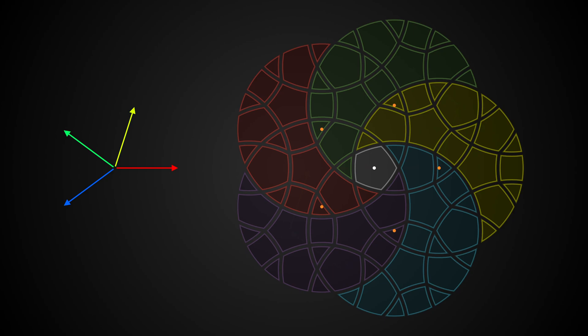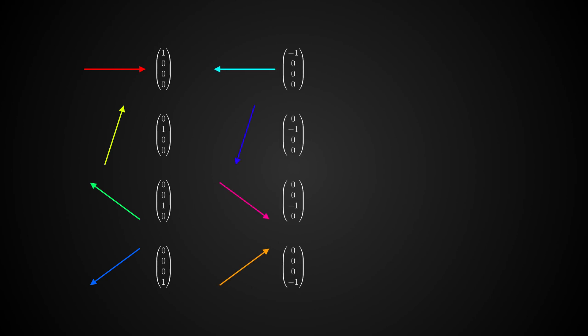I promised we'd be using vectors and matrices, so how does that work? We can map these arrows to four-dimensional vectors. We define the red arrow to correspond to the first unit vector, and we do the same for the other three arrows. The inverses correspond simply to the negative versions of the four vectors we just defined.